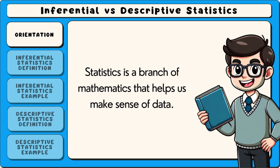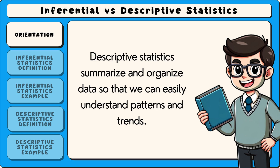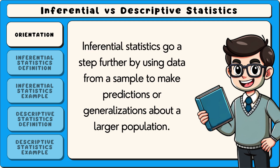Statistics is a branch of mathematics that helps us make sense of data. It can be divided into two main types: inferential statistics and descriptive statistics. Descriptive statistics summarise and organise data so that we can easily understand patterns and trends. Inferential statistics go a step further by using data from a sample to make predictions or generalisations about a larger population.